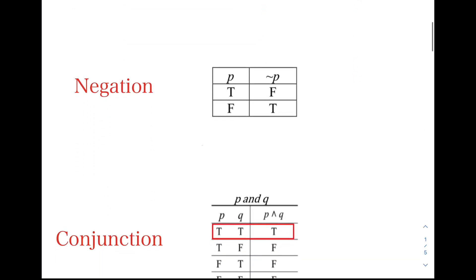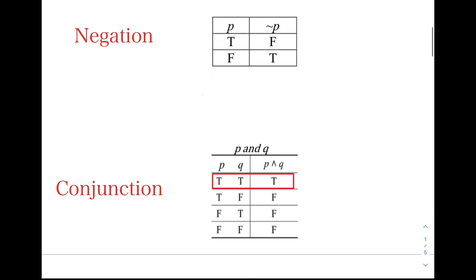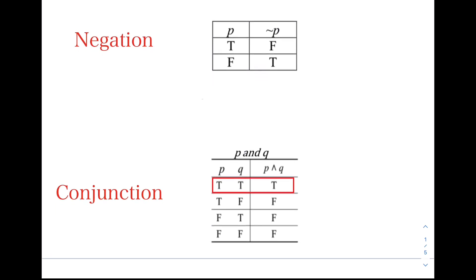Let's discuss negation. The negation of statement P is denoted by ¬P, which implies the opposite of the truth value of the statement. For example, if statement P is true, then the negation ¬P is false. If P is false, then ¬P is true.